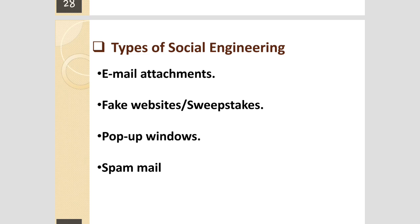So these are the things related to computer-based social engineering. There are two types of social engineering: human-based and computer-based. Human-based means person-to-person communication where the social engineer gets the credentials of the victim. Computer-based social engineering, also called phishing, uses technical means to get credentials from the victim's system. The categories under computer-based social engineering are email attachment, fake website or swift text, pop-up windows, and spam emails.